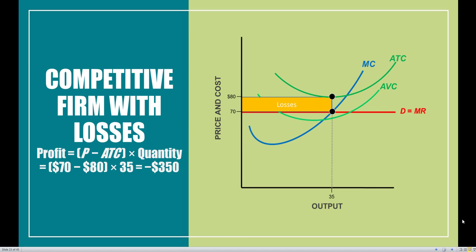Starting off with the same five-step pattern for maximizing profits: step number one is to find MR equals MC — that's the intersection right here. Step number two is to find Q star — go straight down to the quantity axis where Q star is equal to 35. Step number three is to find P star, our profit maximizing price, which is equal to $70.